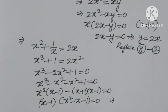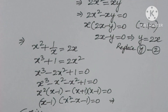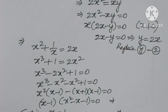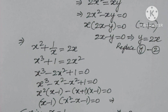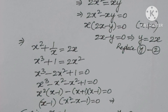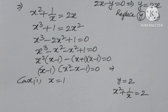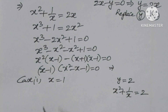Case 1: x equals 1. Then y equals 2. So x squared plus 1 by x equals 2.